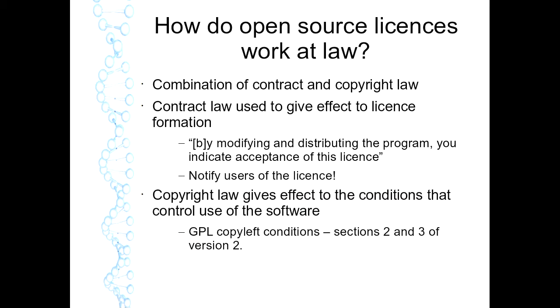The second stage of open source licensing is copyright law. Copyright law gives effect to the conditions that control use of the software. Copyright attaches to literary and artistic works as defined by the Berne Convention, and it attaches to the originality associated with a particular work. In exchange for that originality, the developer receives exclusive rights with respect to the use and ongoing adaptation of that particular work.